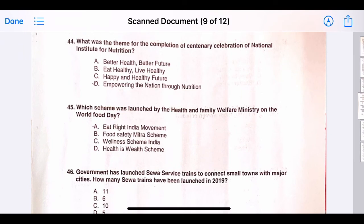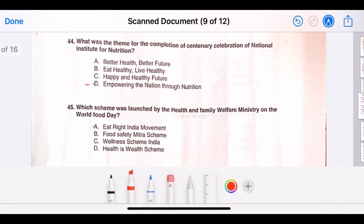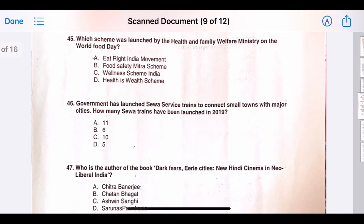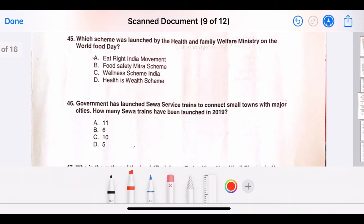Forty-four, which was the theme for the completion of the centenary celebration of National Institute for Nutrition? The correct answer is option D, empowering the nation through nutrition. Forty-five, which scheme was launched by the Health and Family Welfare Ministry on the World Food Day? The correct answer is option A, Eat Right India Movement.